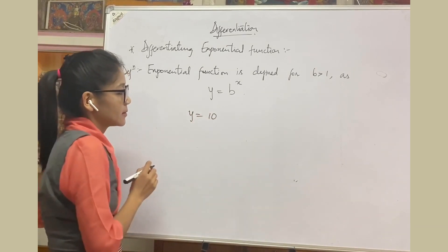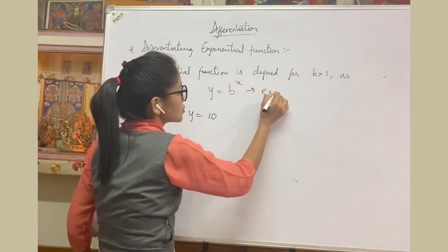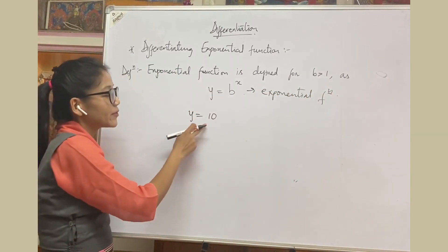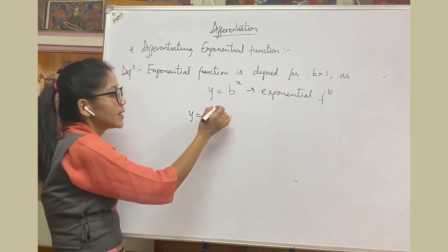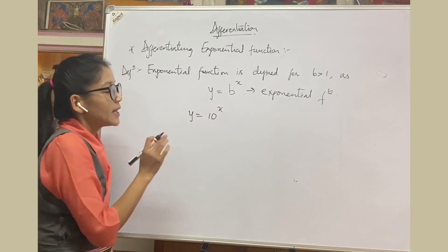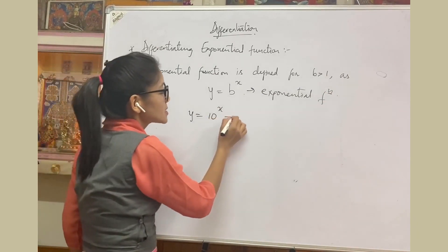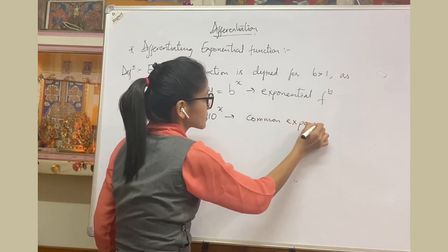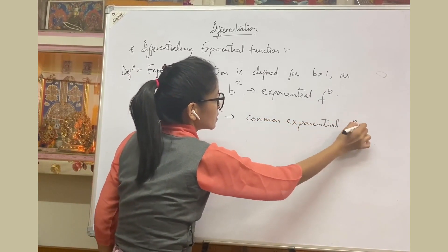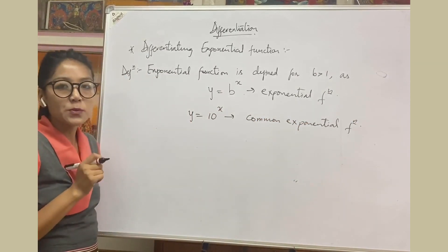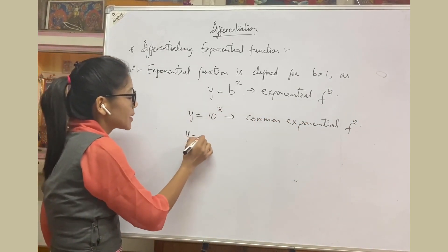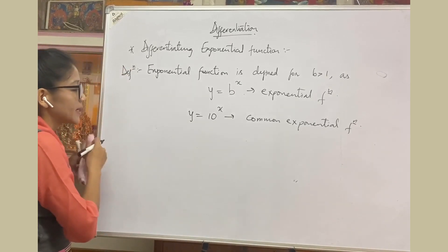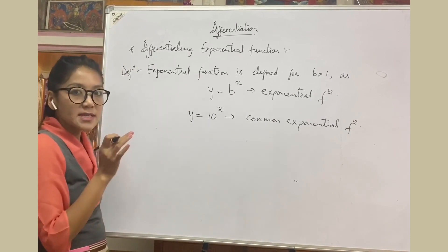If we fix the base as 10, giving y = 10^x, this is called the common exponential function. If instead we fix the base as e, we get the natural exponential function.